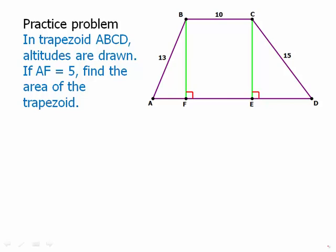Here's a practice problem. Pause the video, and then we'll talk about this. In trapezoid ABCD, altitudes are drawn. If AF equals 5, find the area of the trapezoid.